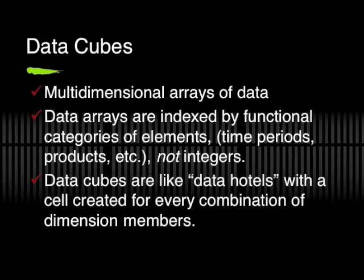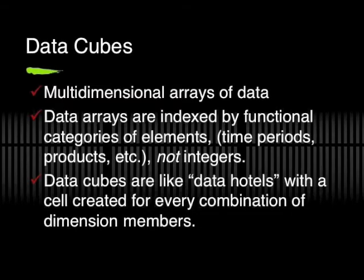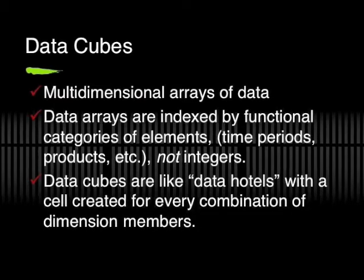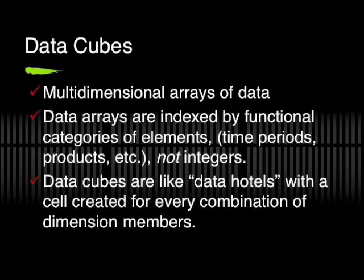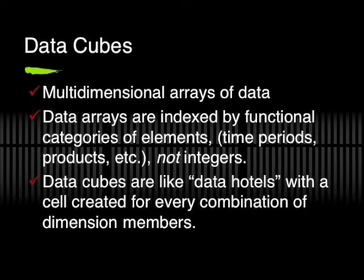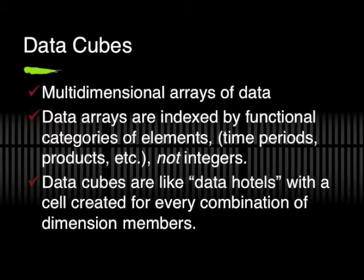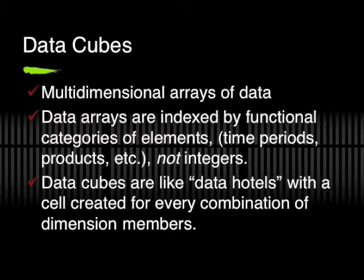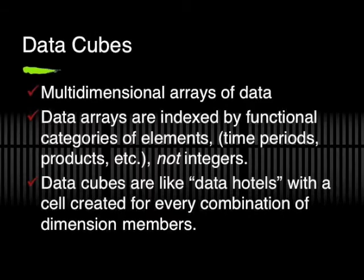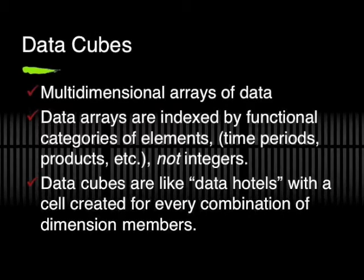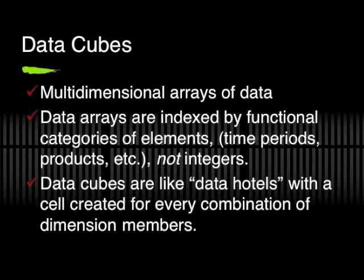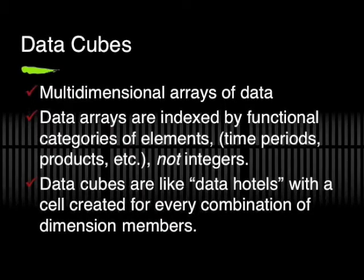Information provided in the OLAP framework consists of multi-dimensional cubes of data. These are arrays of data broken out into functional categories that correspond to business drivers. These cubes are like data hotels with rooms — data cells — for every combination of dimension members. Data cubes often comprise very large sets of data cells.